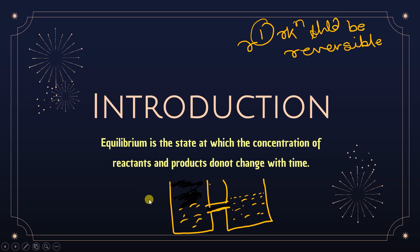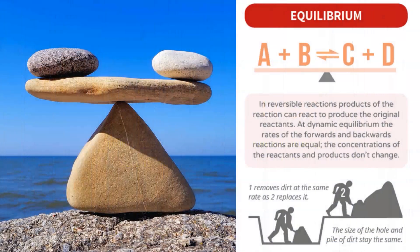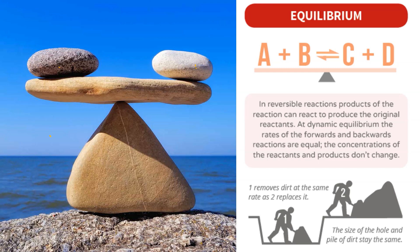Equilibrium is the state at which the concentration of reactants and products does not change with time. Another example: if both sides of a balance have the same weight, it stays in a straight line. If one side is heavier, it goes down. Since both sides have the same weight, the balance is in equilibrium — not moving in any particular direction. A reaction in equilibrium is shown with a reversible double arrow.